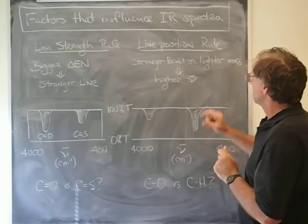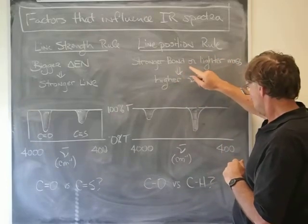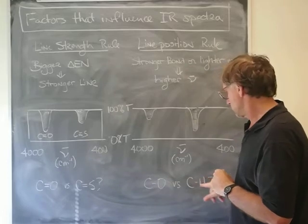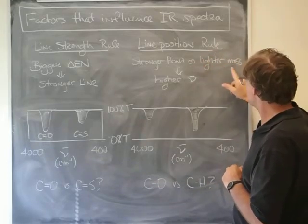Let's see how that checks out with the line position rule. Stronger bond—no, we have the same bond strength here—but we do have a lighter mass.